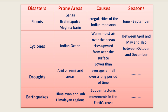Cyclones. Prone areas: Indian Ocean. Causes: warm moist air over the ocean rises upward from near the surface. Seasons: between April and May and also between October and December. Droughts. Prone areas: arid or semi-arid areas. Causes: lower than average rainfall over a long period of time. No specific seasons.